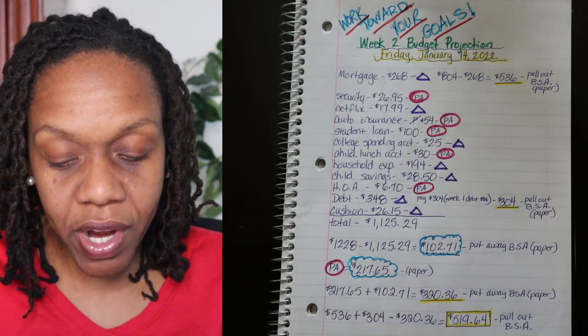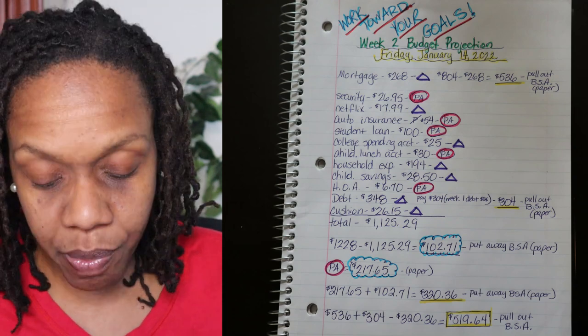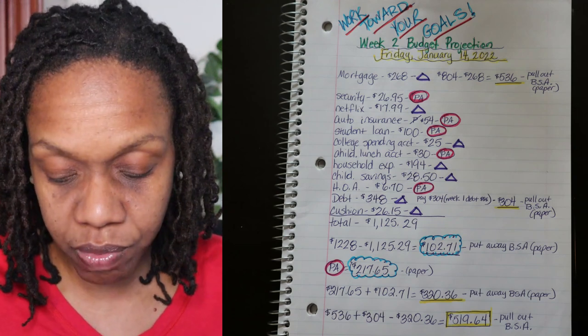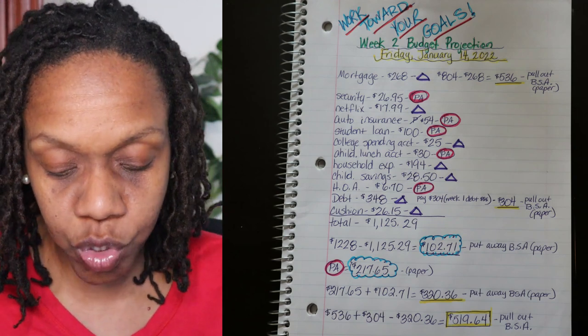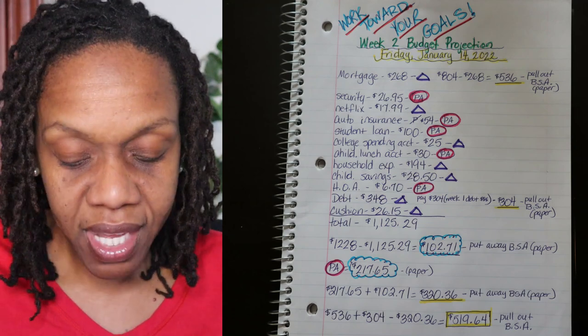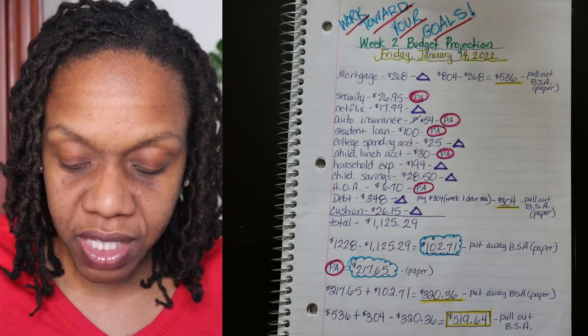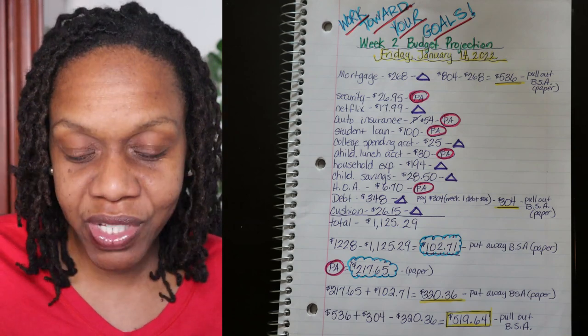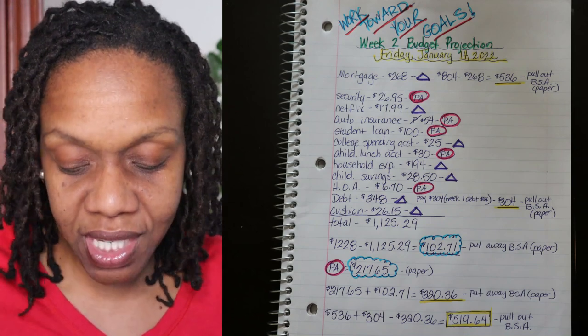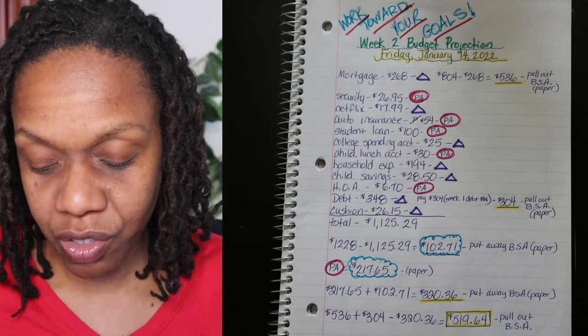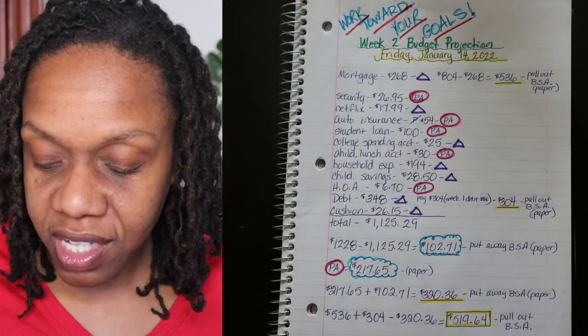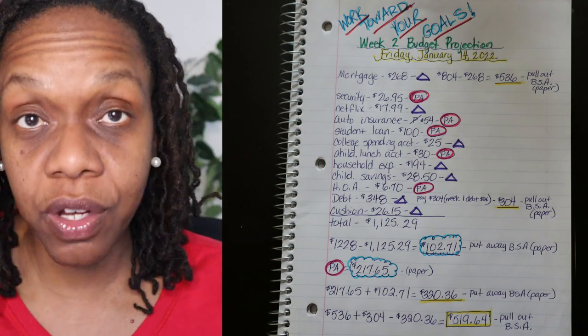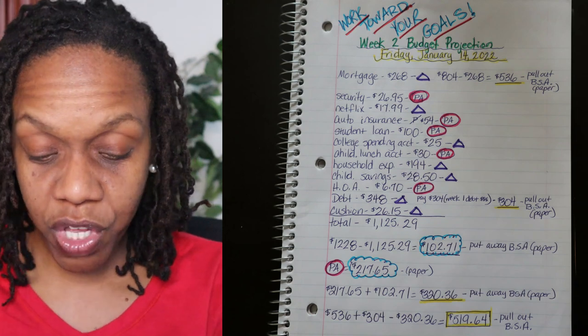Step number four is to add those numbers together. So if we add those two numbers with the blue clouds around them together you will see that 217.65 plus 102.71 equals 320.36. That is the amount I need to put away in the bill savings account total amount right here on paper.